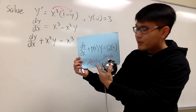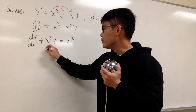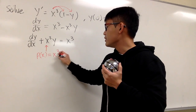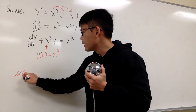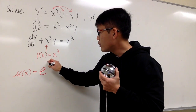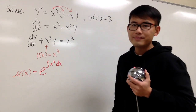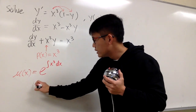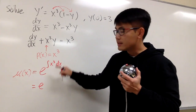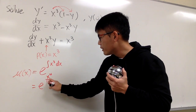You have to remember the formula for the integrating factor. You have to make sure that you choose the correct p. Here p(x) is positive x to the third power, and the formula for the integrating factor mu(x) is equal to e raised to the power of the integral of p(x) dx, which is x to the third power dx. Let's work out the integral. The integral of x to the third power is x to the fourth power over 4.